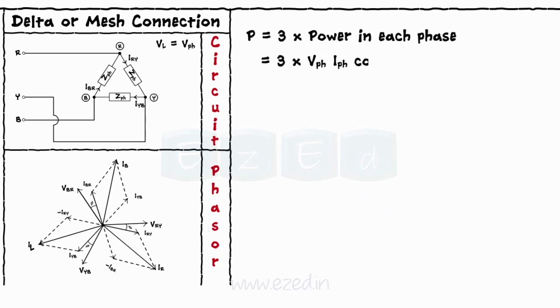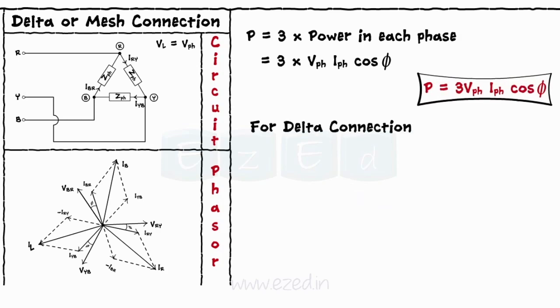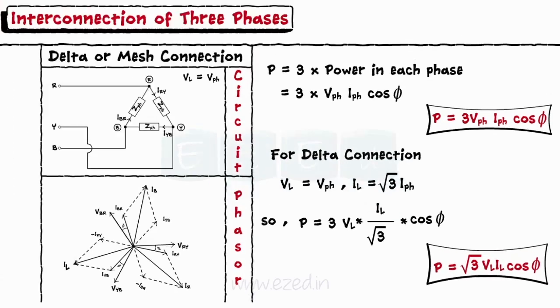Power is given as P equals 3 into V_PH I_PH cos phi. But V_L equals V_PH and I_L equals root 3 into I_PH. Substituting these values we get the power as P equals root 3 into V_L I_L cos phi.